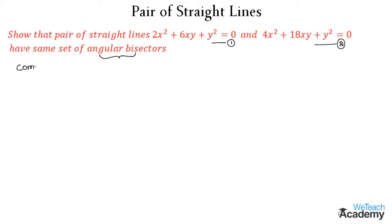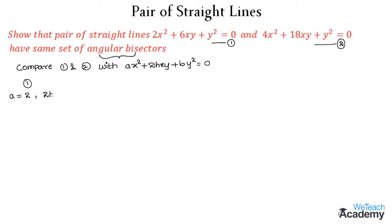Now let us compare these pairs of straight lines with the standard form: ax² + 2hxy + by² = 0. Comparing equation 1, we get a = 2, and 2h = 6, which implies h = 3, and b = 1. Comparing equation 2, we get a = 4, and 2h = 18, which implies h = 9, and b = 1.